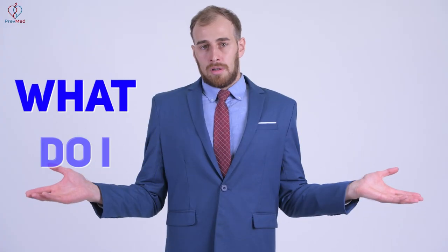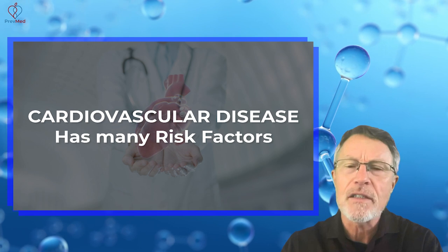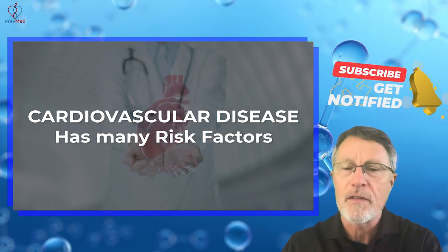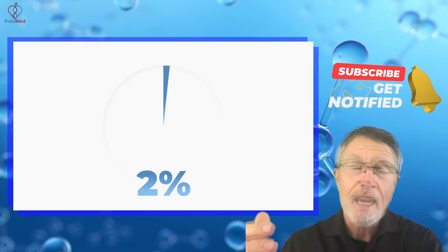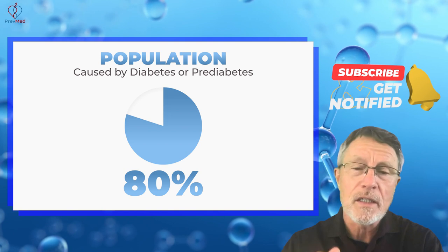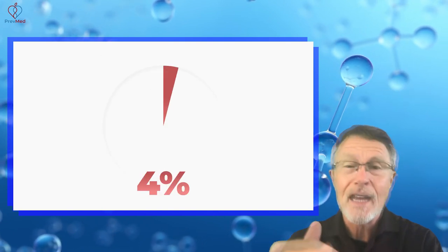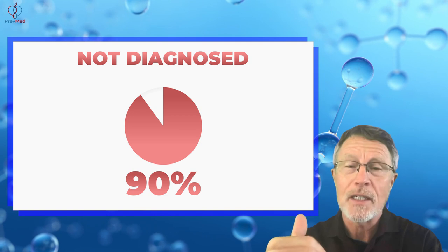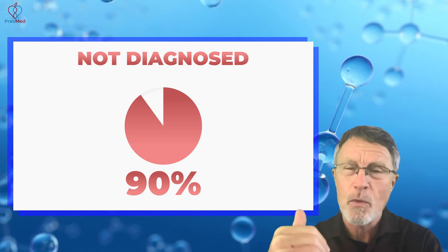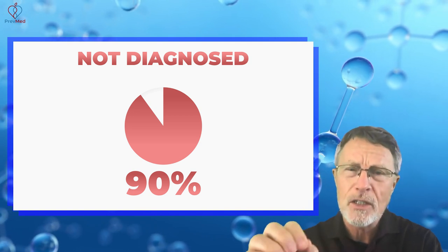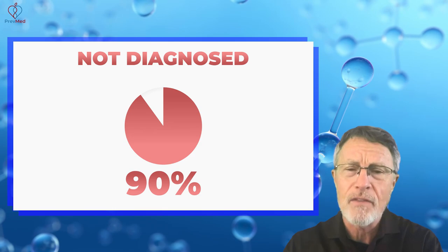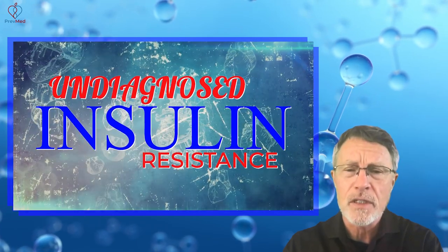The summary is: so what do I do? I can't advise individuals on the internet, but I can give general advice. Cardiovascular disease has very many risk factors. About 80% of it population-wide is caused by diabetes or prediabetes, 90% of which has not been diagnosed. So that's one of the biggest things you can do — make sure that you don't have that undiagnosed insulin resistance.